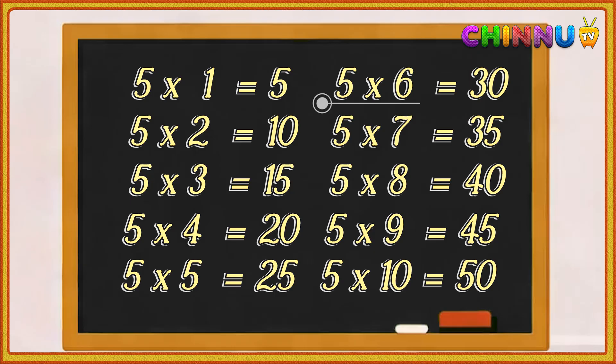Five sixes are thirty, five sevens are thirty-five, five eights are forty, five nines are forty-five, five tens are fifty. Thank you for watching the video. Please do subscribe to our channel and press the bell icon.